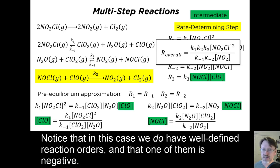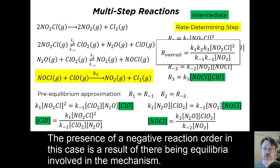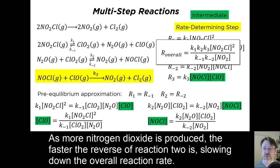Notice that in this case, we do have well-defined reaction orders, and that one of them is negative. The presence of a negative reaction order in this case is a result of there being equilibria involved in the mechanism. As more nitrogen dioxide is produced, the faster the reverse of reaction 2 is, slowing down the overall reaction rate.